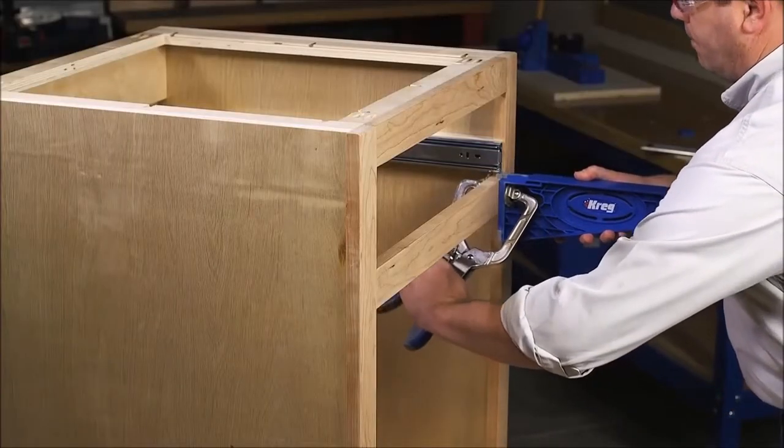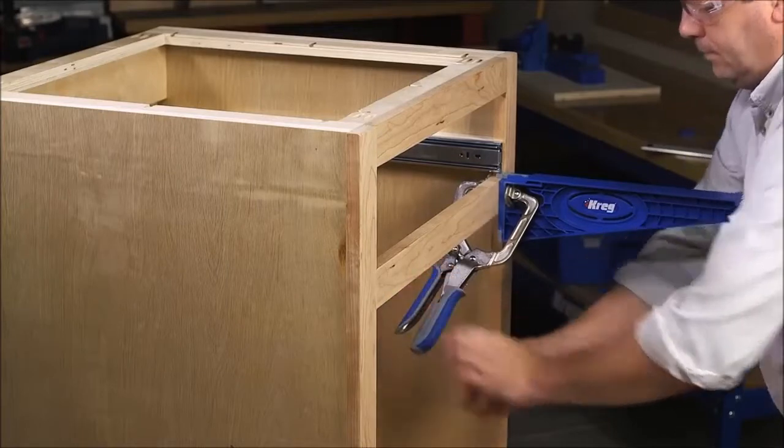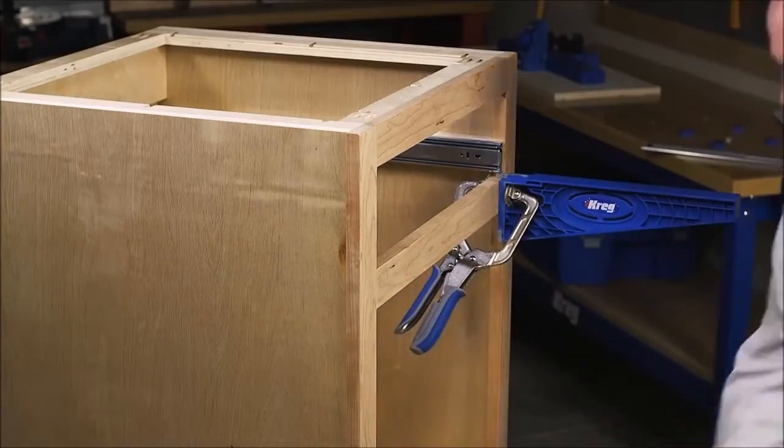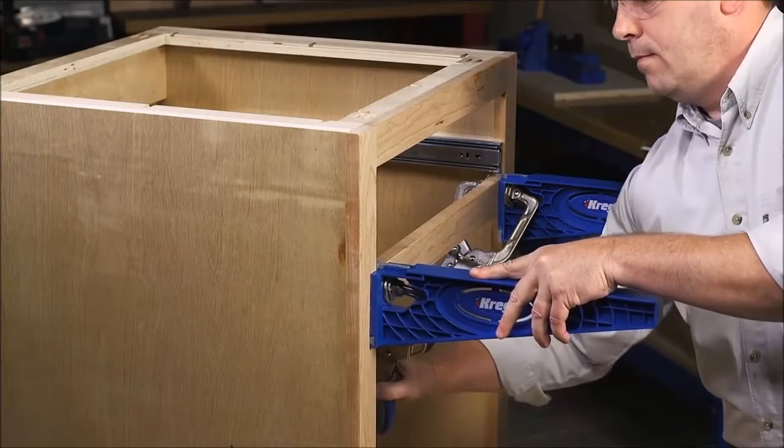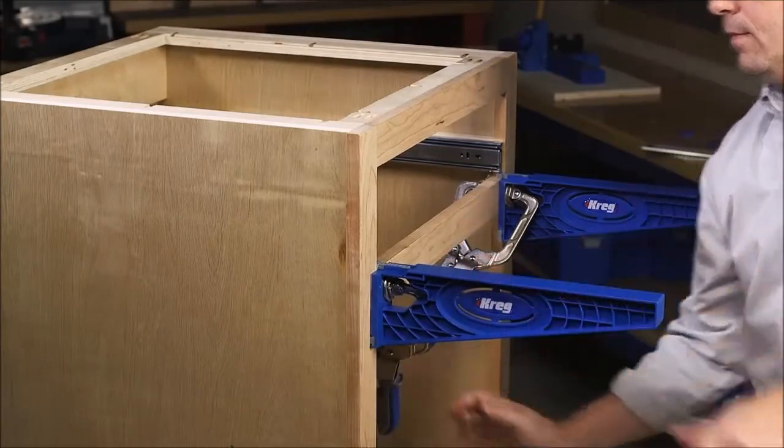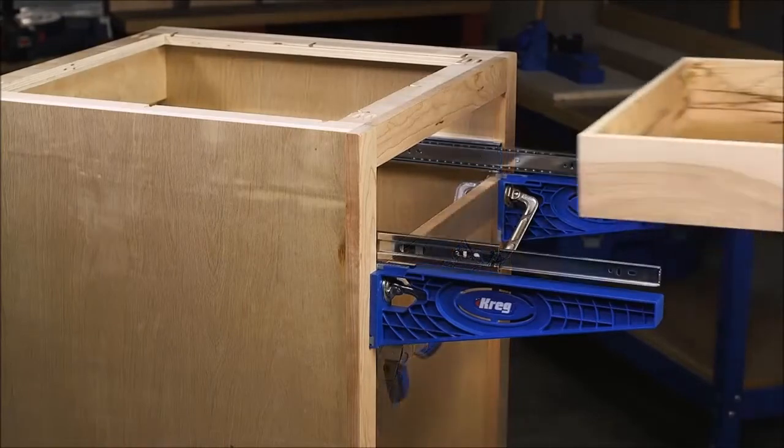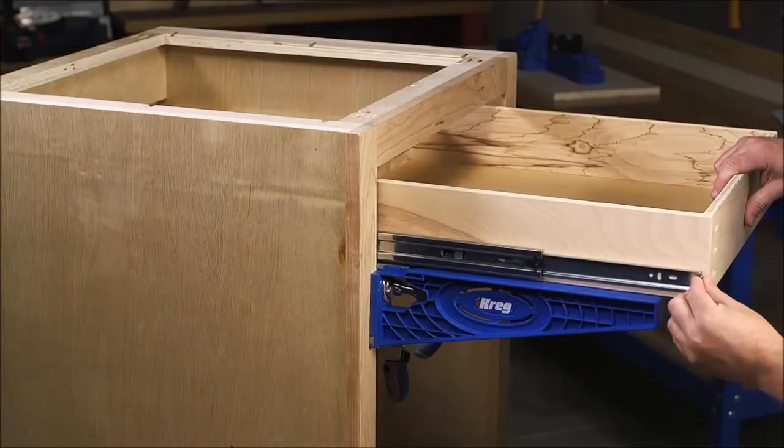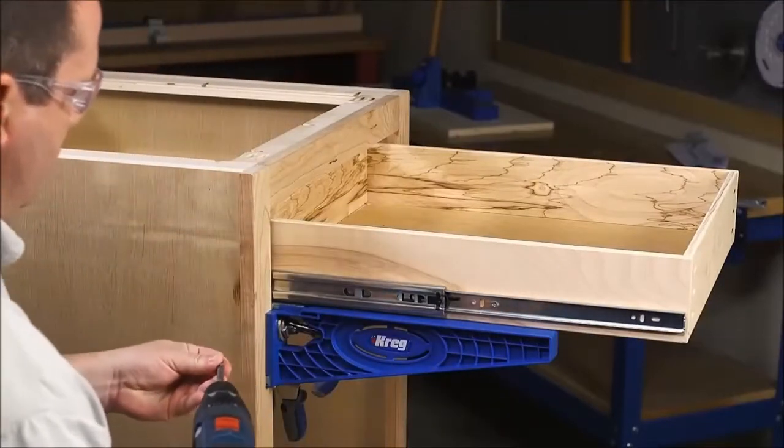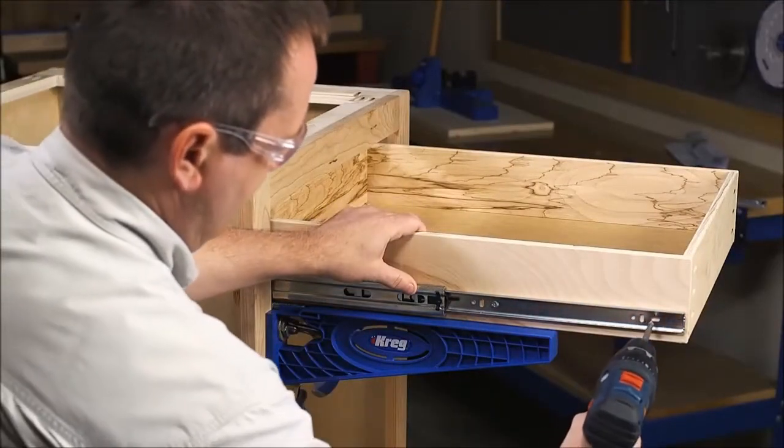The drawer slide jig doesn't stop there. The job isn't complete until the drawer box itself is aligned and installed. That's why the jig's brackets are reversible so they can be mounted to protrude out of the cabinet and hold the drawer box in the exact right position. This allows you to set the drawer box on the brackets and pull the slides into position while the sturdy brackets hold everything in place.